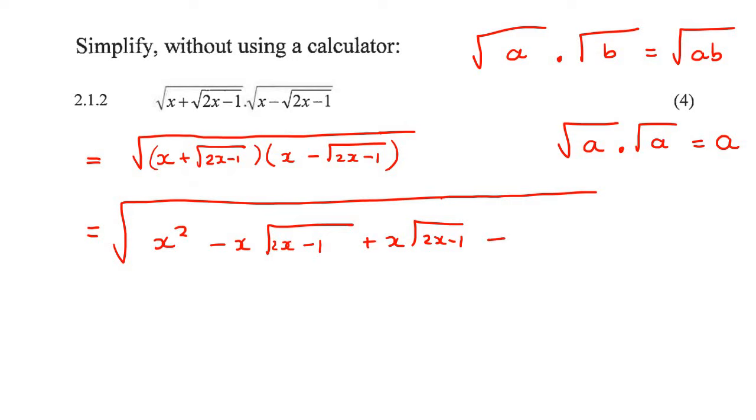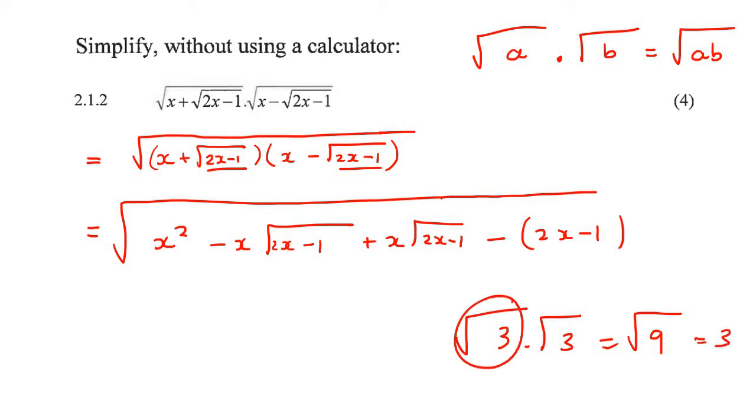If these two things in the square root are the same, then it just becomes whatever's inside the square root, but you take the square root away. Let me show you what I'm talking about. So square root 3 times square root 3 is the square root of 9, right, if we follow this rule here. But then the square root of 9 is just 3. So what I'm trying to say is that when you multiply the square root of two things that are the same, the answer just becomes that thing.